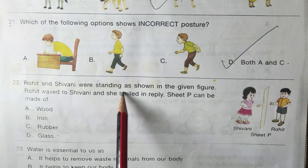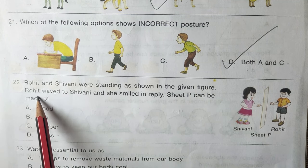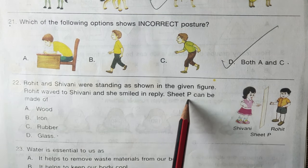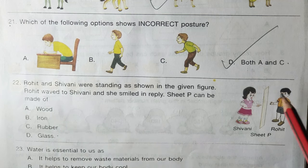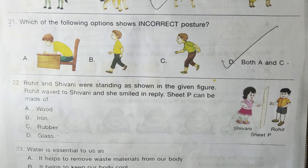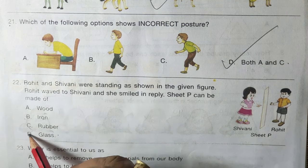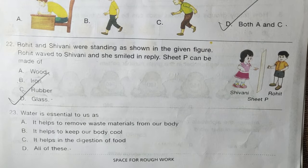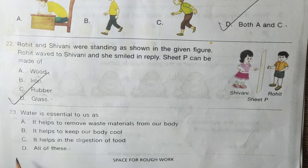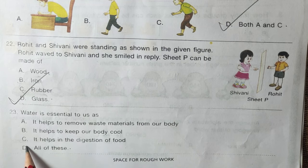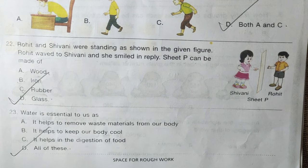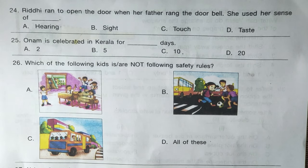Question number twenty-two: Rohit and Shivani are standing as shown. Rohit waved to Shivani and she smiled in reply. Sheet P can be made of what material so that this communication is possible? Options are A — wood, B — iron, C — rubber, D — glass. Correct answer is D — glass. Question number twenty-three: water is essential as it removes waste materials, keeps the body cool, and helps in digestion. Correct answer is D — all of these.